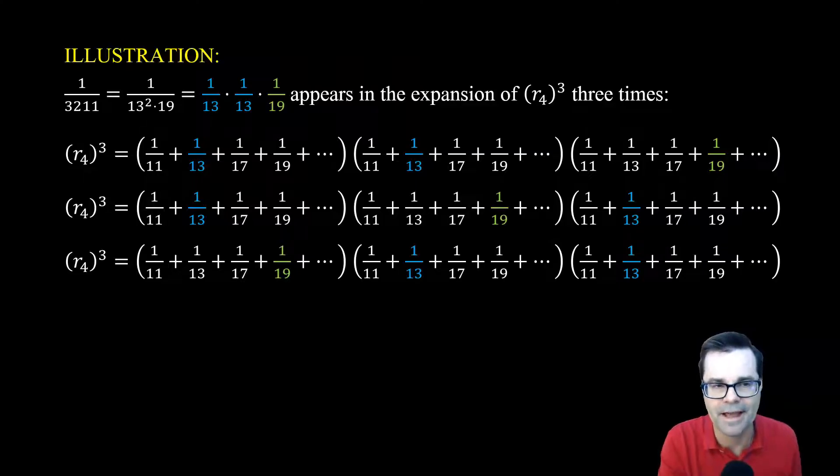But the point is that every reciprocal of an integer that is not divisible by the first k primes has to show up somewhere if we raise it to some power, because it's going to have a certain number of prime factors.